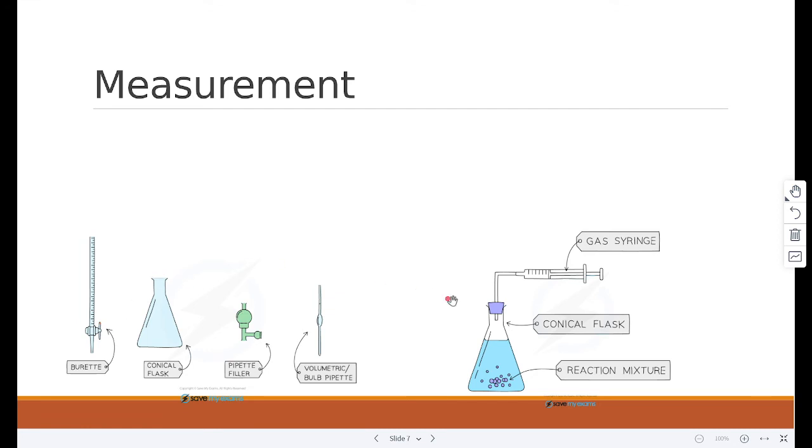We can measure the volume of a gas by using a gas syringe. This is a reaction mixture going on right over here, and the gas released will be collected in the gas syringe. This is how we can determine the volume of gas.